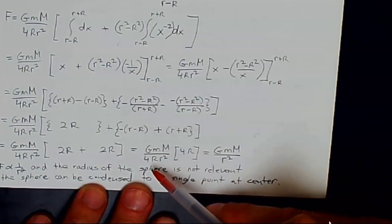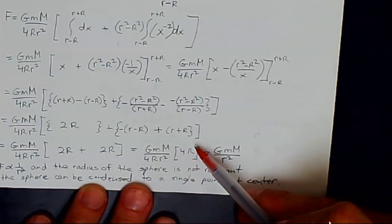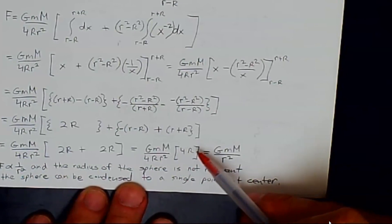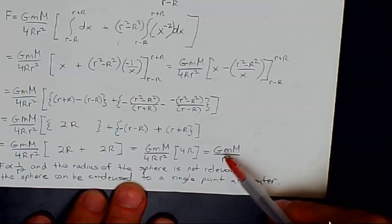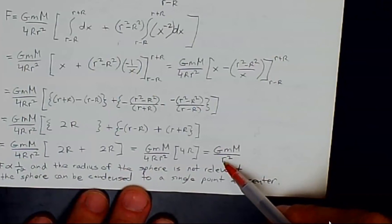This is the radius of the shell, and you see it cancels out of the equation, and the only thing that matters is the little mass outside the shell, the mass of the shell, the gravitational constant, and the distance between their centers.